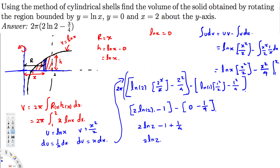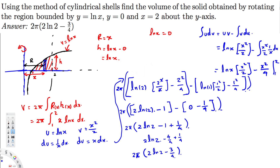Multiplying by 2π, we write -1 as -4/4, so -4/4 + 1/4 = -3/4, giving 2 ln 2 - 3/4. The final answer is 2π(2 ln 2 - 3/4). I hope you guys find this video helpful, see you next time!